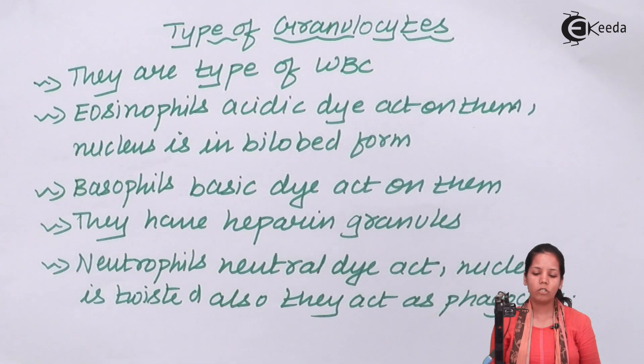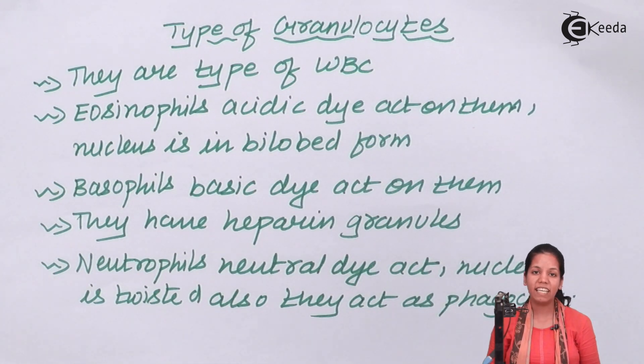The three major types of granulocytes are basophils, eosinophils, and neutrophils.